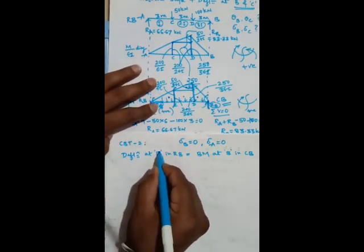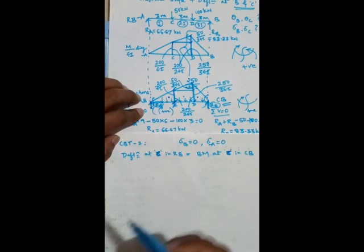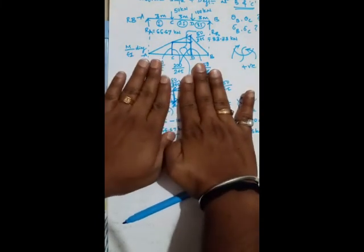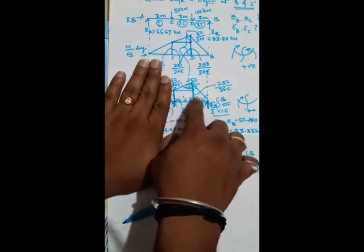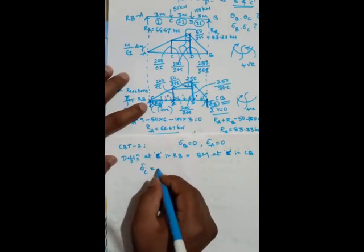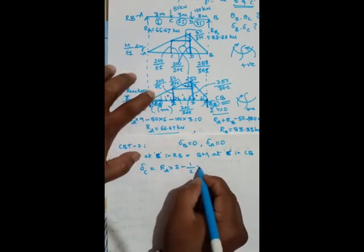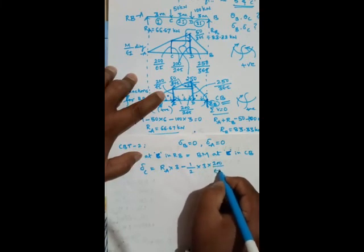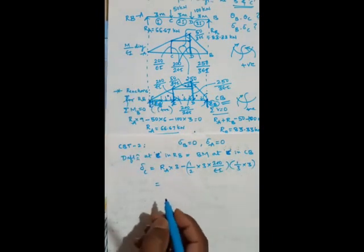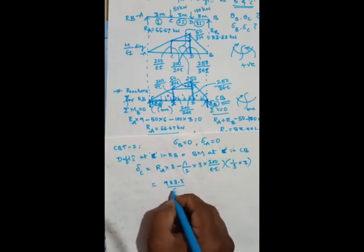For delta C (deflection at C in real beam = bending moment at C in conjugate beam): consider the left hand side (only triangle A-C and Ra). Delta C = Ra × 3 minus (half × 3 × 200/EI) × (1/3 of 3) = 427.78/EI × 3 − (half × 3 × 200/EI × 1). Simplifying: delta C = 983.3/EI meters.